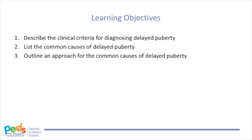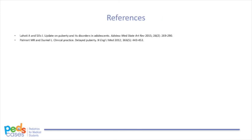Let's review our learning objectives for this video. Hopefully by now you are able to describe the clinical criteria for diagnosing delayed puberty and list the common causes of delayed puberty. We have come to the end of our three-part series on puberty and pubertal disorders. Thank you for watching. Check out www.pedscases.com for more great podcasts, videos, interactive cases, questions, and more. Please subscribe on iTunes and consider leaving a review, sharing with friends and colleagues, or getting involved.